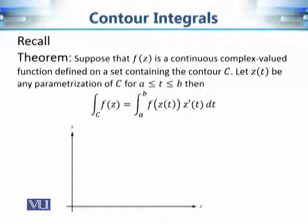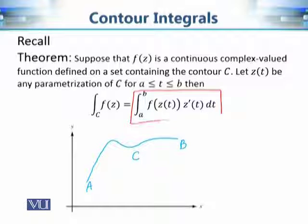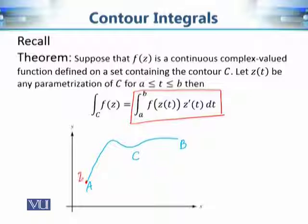We saw a way to evaluate the contour integral: if we have a complex-valued function f(z) and we want to evaluate this function along contour C, we express it as an integral of a complex-valued function of one real variable t, with limits of integration from a to b, integrating from z(a) to z(b).